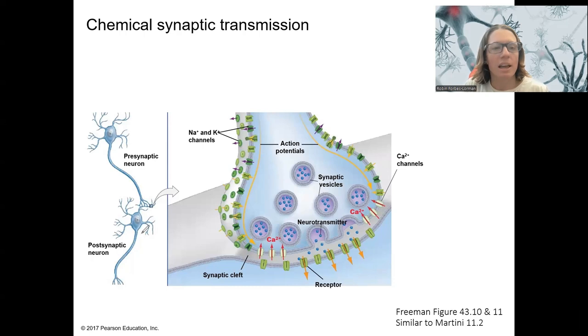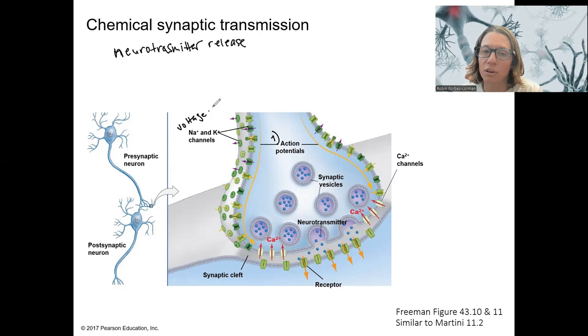So we're zoomed into that same place here. And now this is just showing chemical synaptic transmission, meaning using neurotransmitters. So this is an overview here. I'll then kind of go by step by step. So first step is we've got an action potential come down the axon to the axon terminal. That's what's happening right here. Sodium and potassium channels, voltage-gated, are involved in that.